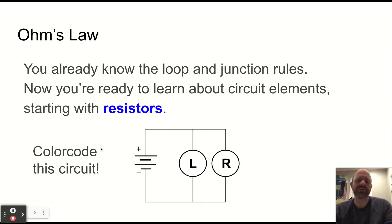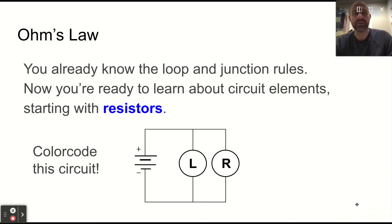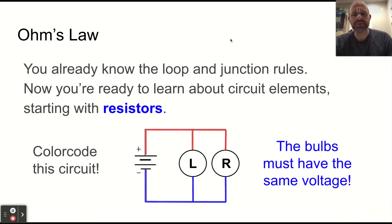If you were to build a circuit like this, which you could build with your castle kit or in the simulation, it turns out that if you color code the circuit, the bulbs must have the same voltage, even though they're two different bulbs, same voltage as the battery.